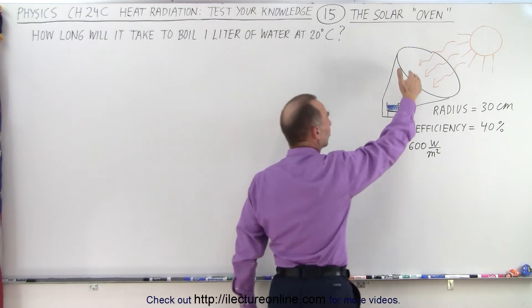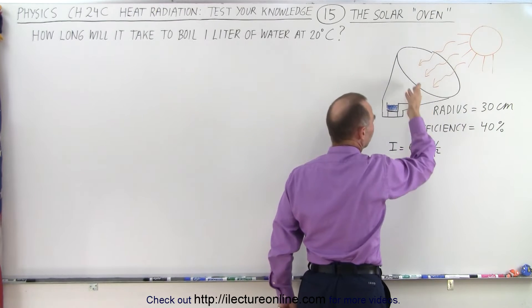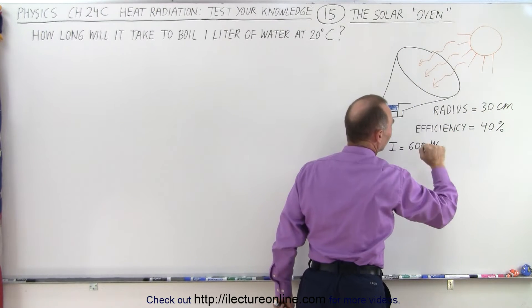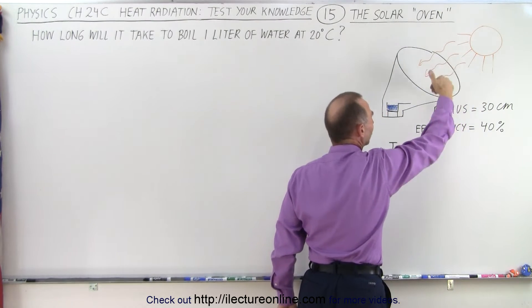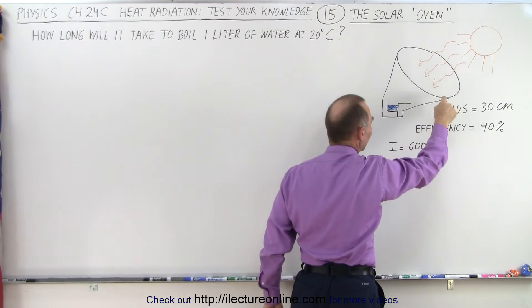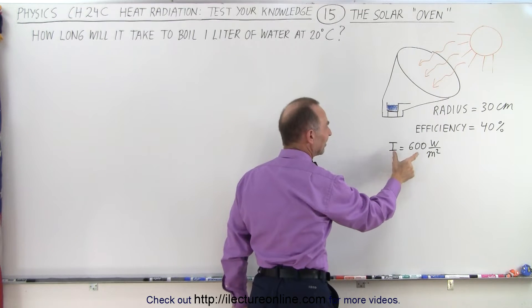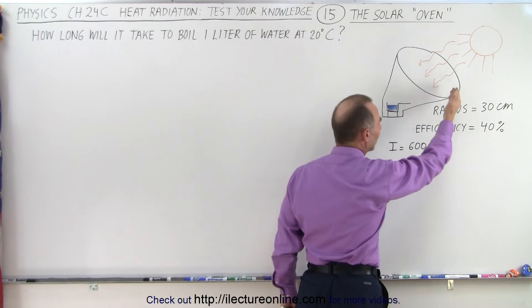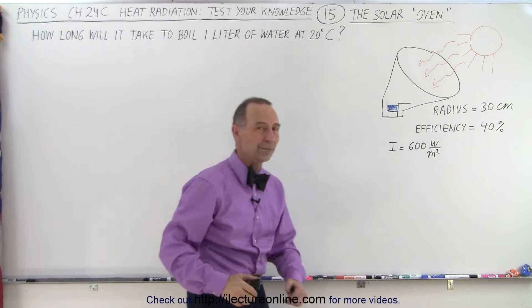So let's assume that the radius of the inlet of that cone is about 30 centimeters. Let's say the efficiency of all the sunlight entering this oven is about 40% of that makes it to the water to heat it. And let's say that the intensity on a cloudless day is about 600 watts per square meter.